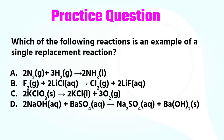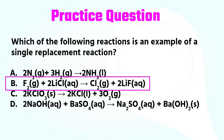Let's see how effective this video was in helping you understand single replacement reactions. In our first practice question, we have a multiple choice situation asking which of the following reactions is an example of a single replacement reaction. The answer is letter B — we have a single element, fluorine, replacing another halogen, chlorine, which is part of a compound. Letter A would be classified as a synthesis reaction, letter C would be a decomposition reaction, and letter D is an example of a double replacement reaction.